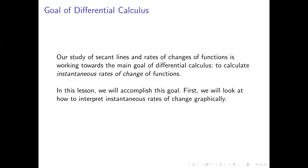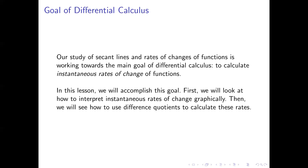All this business about tangent lines will accomplish this goal for us. The first thing we're going to look at is how we can interpret an instantaneous rate of change graphically. We did this for average rates of change and saw that we can interpret them as slopes of secant lines, and we'll build on that here. After that, we'll turn to looking at difference quotients and how we can use them to calculate instantaneous rates of change.